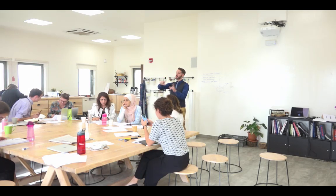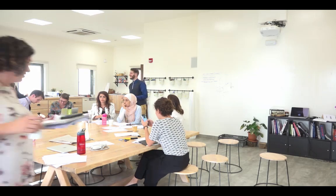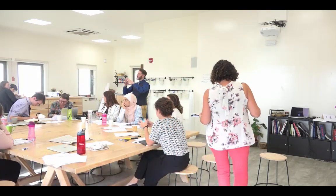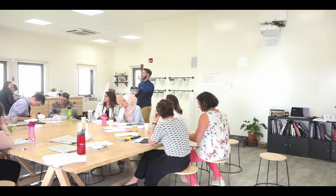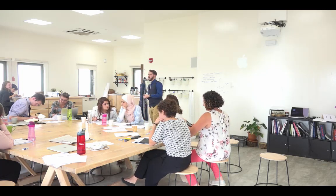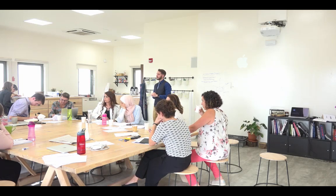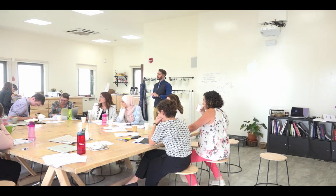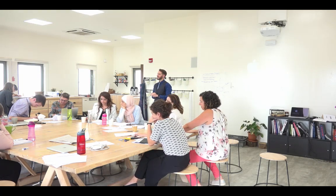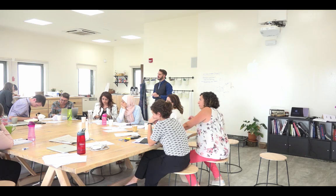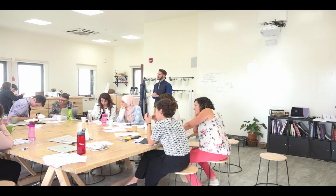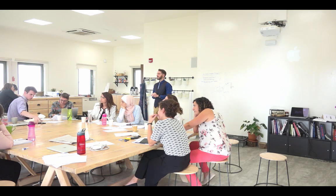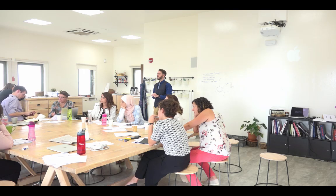Let's start with the history department. What was your enduring understanding or question, how did it break down to the six facets, and what evidence would students need to show? The current unit is about freedom and universal human rights. The basic understanding is that universal human rights are not instinctual — they're not as natural as you might think.